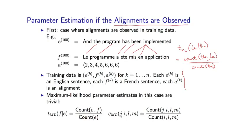Similarly, the maximum likelihood estimates for distortion parameters are a simple ratio of counts. The numerator count is the number of times I've seen word i in French aligned to word j in English, given that the two sentence lengths are L and M respectively. The denominator is the number of times I've seen the ith position aligned to anything, given the lengths L and M.